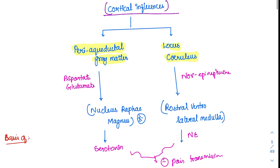This also forms the basis of electro-acupuncture, a type of acupuncture where electrical signals stimulate the brainstem regions directly. This reduces pain impulses from the brain and is very helpful in uncontrolled pain — patients not responding to NSAIDs or standard therapy, such as chronic pain patients, can be treated with electro-acupuncture.